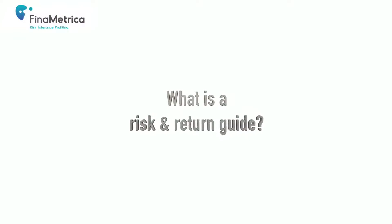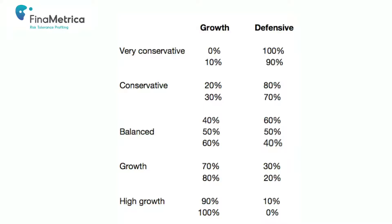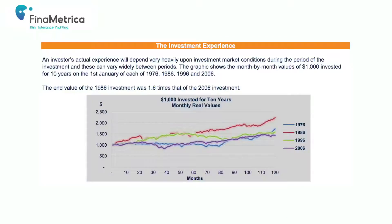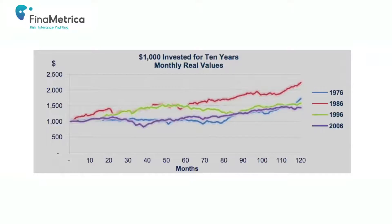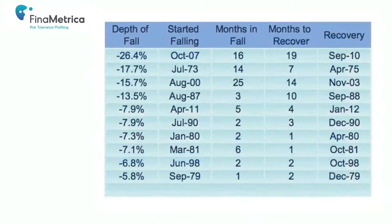What is a risk and return guide? Imagine a portfolio — it can be any mix of assets. Using historical data about the asset's performance, we can construct a guide to the risk and return experiences that any particular portfolio has given to investors in the past. Essentially, the guide shines a spotlight on volatility and performance and shows how these matched or differed from the investors' expectations. The point is to determine if a portfolio is a suitable investment for a client. These guides allow the historic volatility of the potential investment to be compared with the investors' risk tolerance. Any mismatch is a warning sign and becomes the basis for further discussions about risk and return trade-offs between the advisor and their clients.